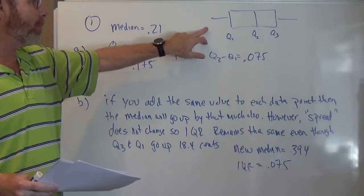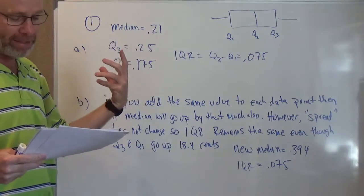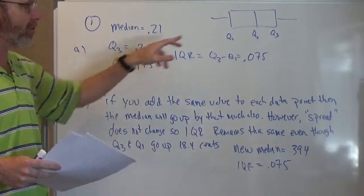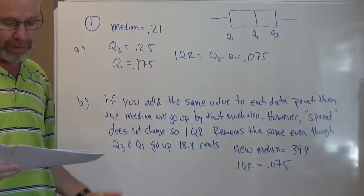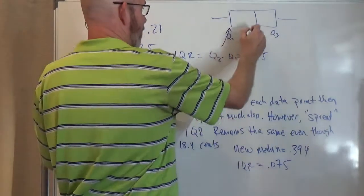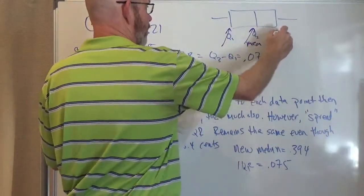They gave you this little box and whisker plot about gas prices and asked you to find the median and the interquartile range and then mark it on the box plot also. So as long as you marked it, quartile one, median, quartile three.